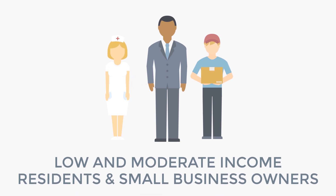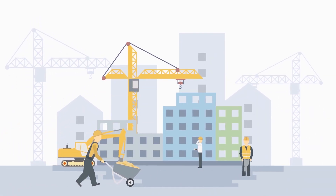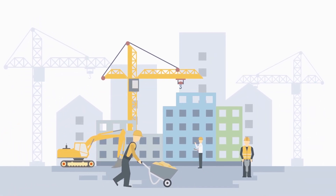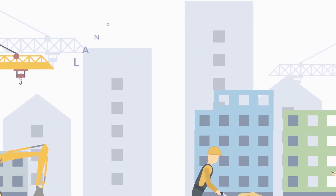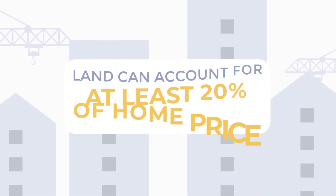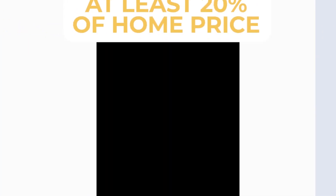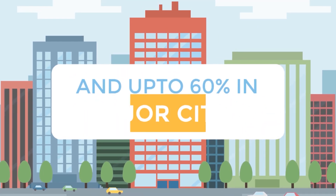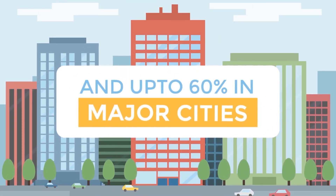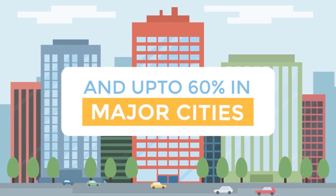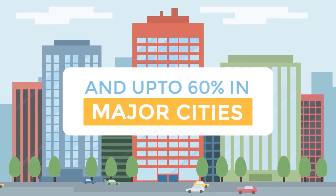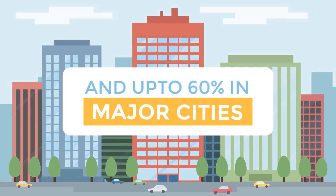By owning the land, the community land trust can keep the home affordable forever. The land can account for at least 20% of the home price. With rising home costs, it can even go up to 60% in major cities like Washington, D.C.